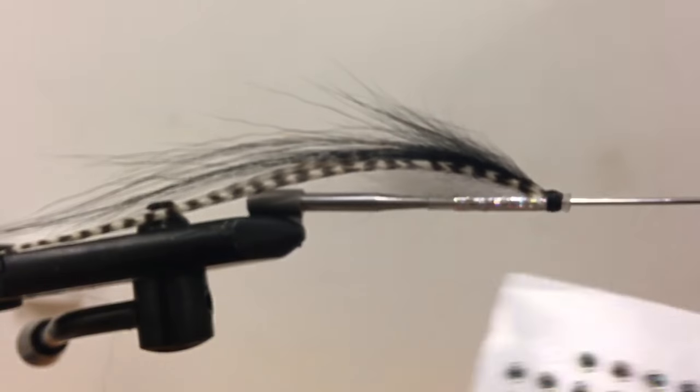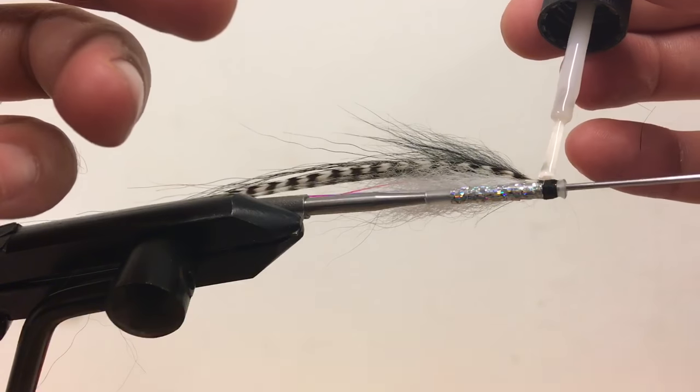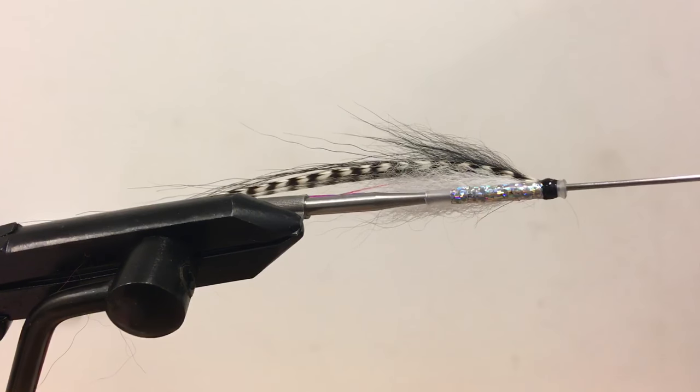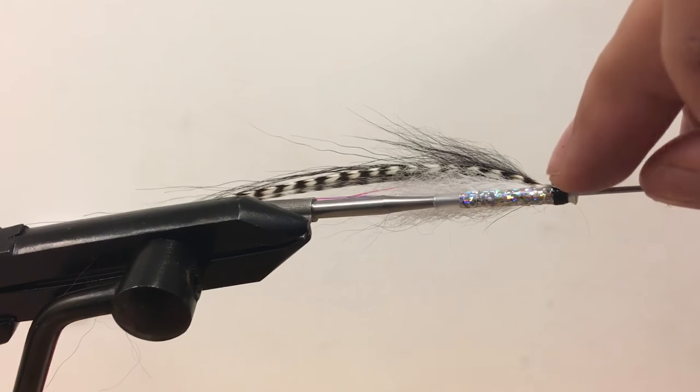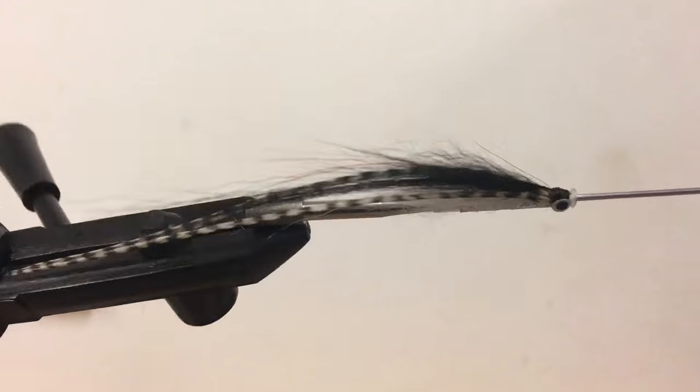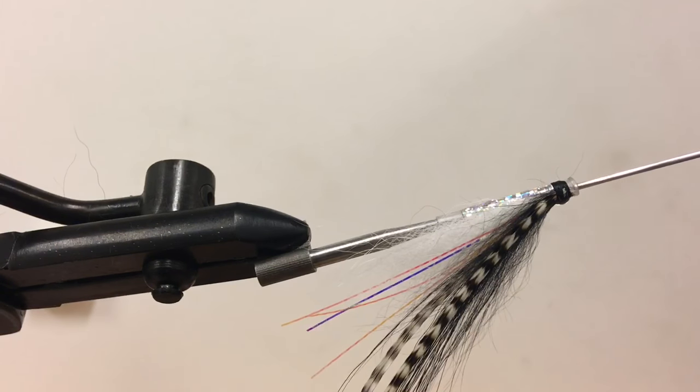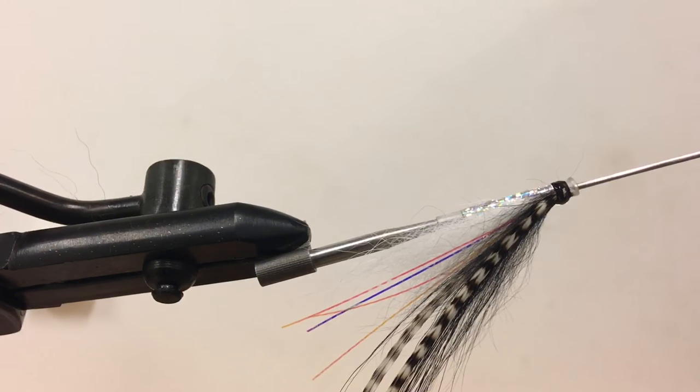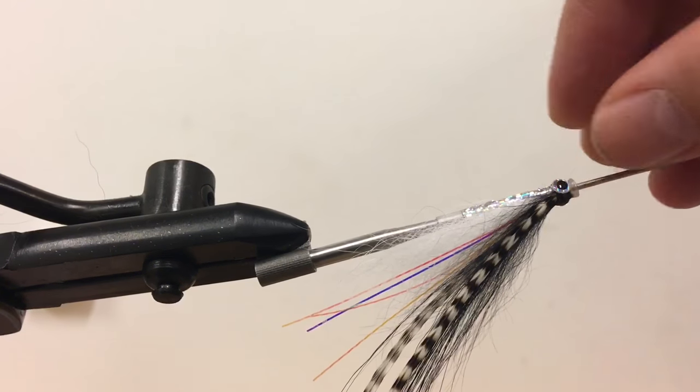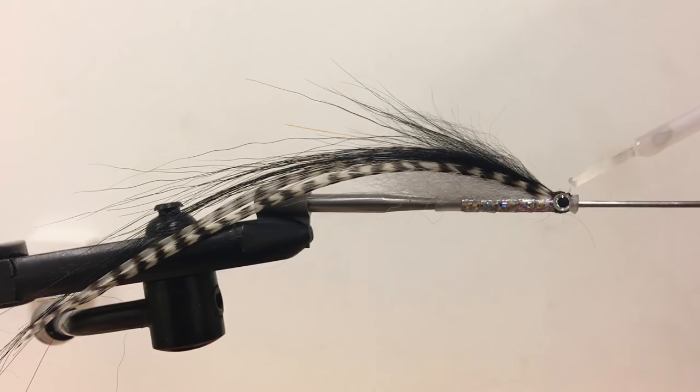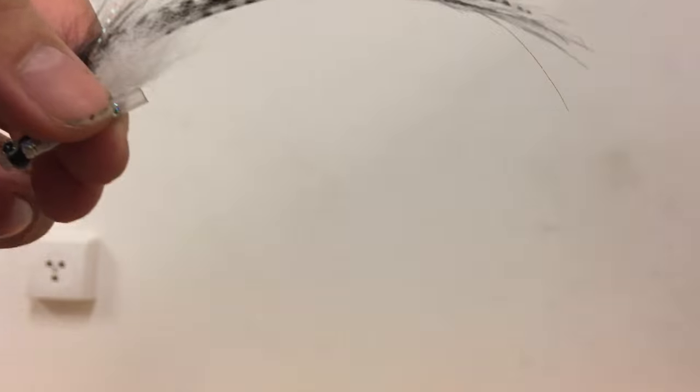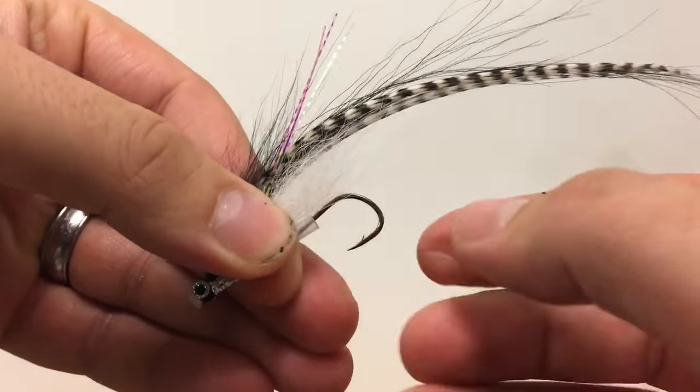We finish the fly with 3.6 millimeter 3D eyes. We put a little bit of super glue under the eyes on both sides, then add the eyes. We secure the eyes with an extra drop of super glue, or if you want, you can use epoxy for the eyes. Then we add a hook for the fly and it's ready to go.